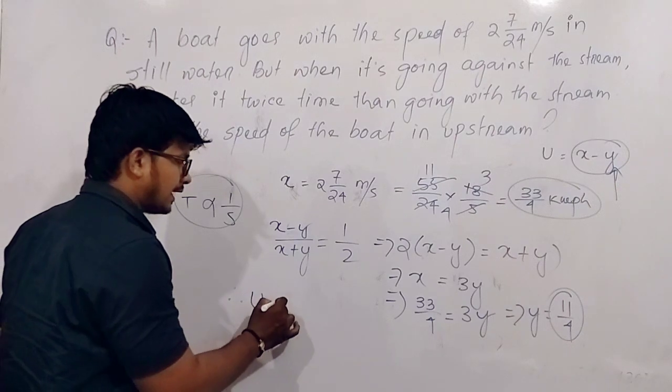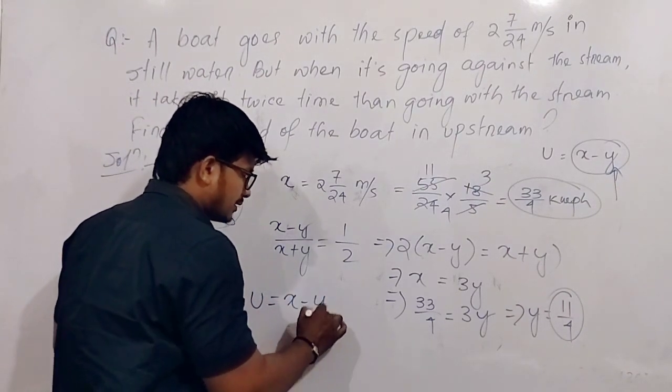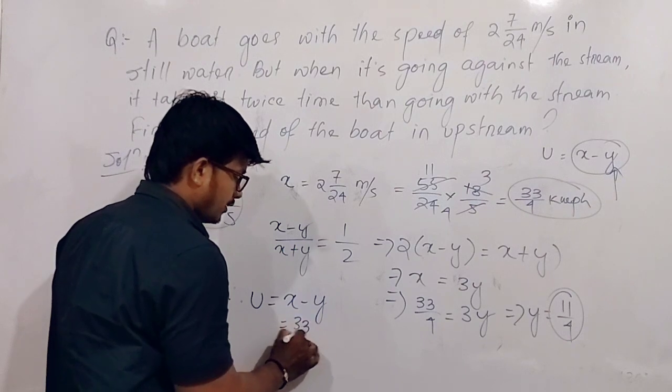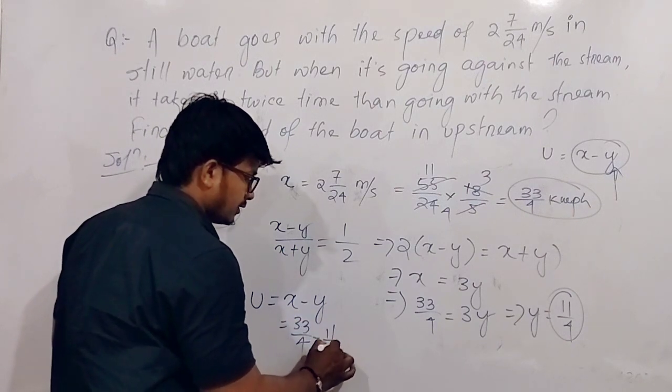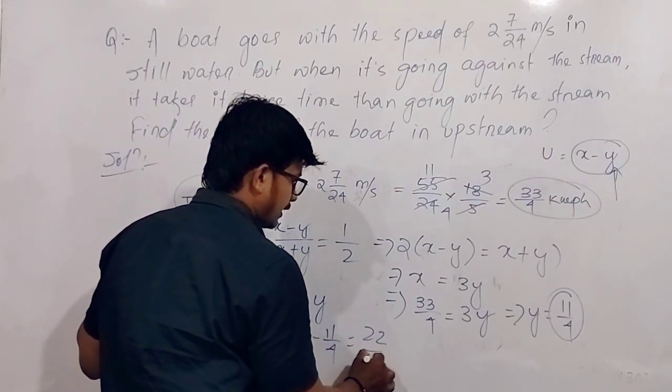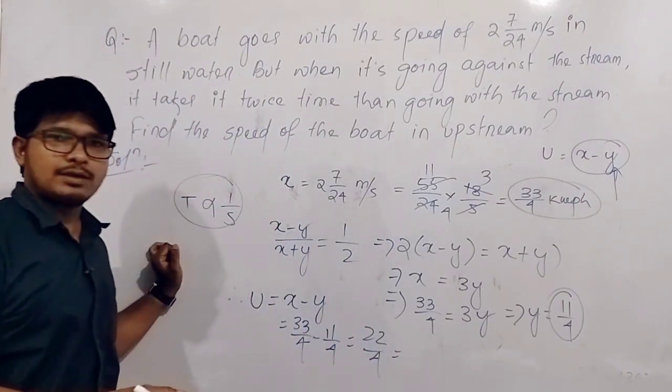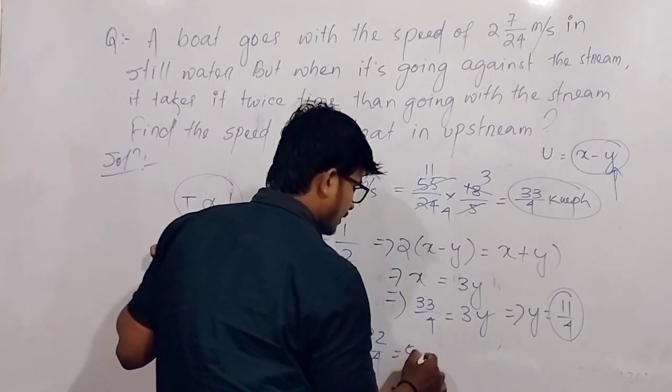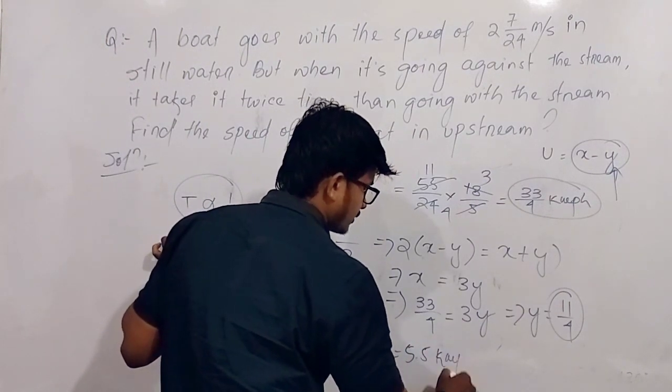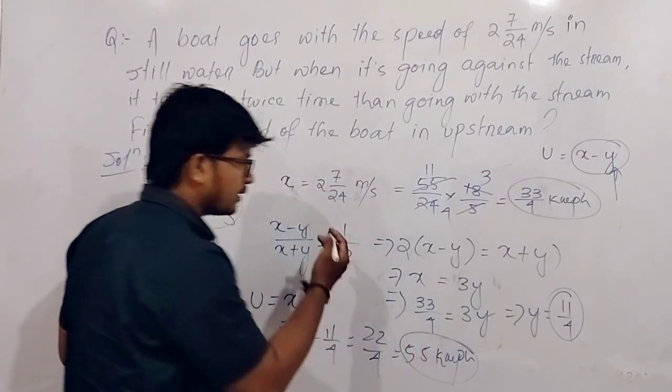Now what do we need? We need upstream speed, and upstream speed equals x minus y. That is 33/4 minus 11/4, that is 22/4, which is 11/2, that is 5.5 km per hour. So answer for this question is 5.5 km per hour.